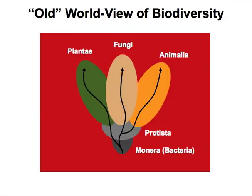Well, this isn't true. Even though I was taught this in college in the early to mid-90s, hopefully it's no longer in textbooks. Because as it turns out, if we were to redraw this tree to represent how many truly diverse groups are within each kingdom, the group Monera would be orders of magnitude larger than all three of the other kingdoms combined.